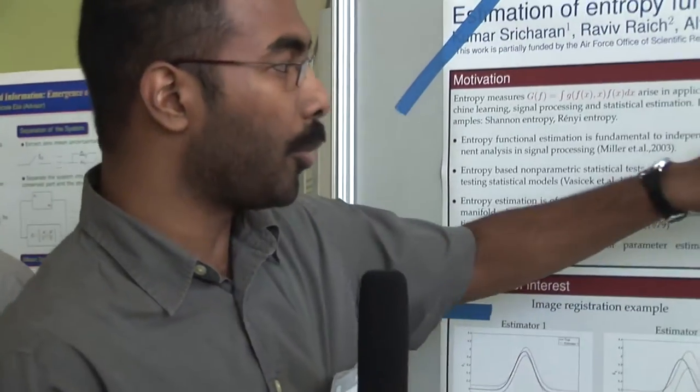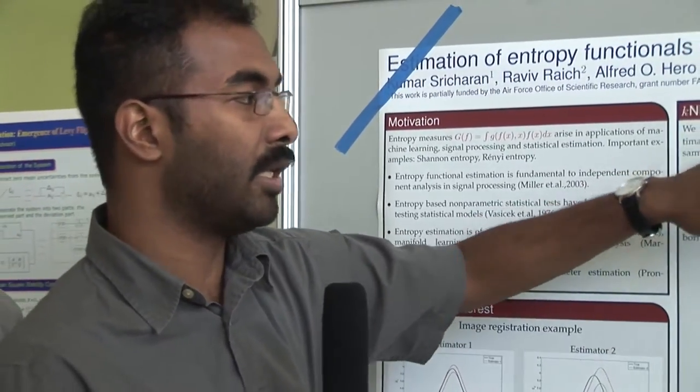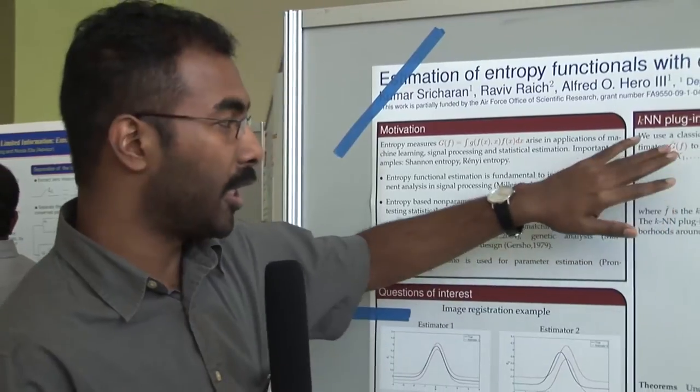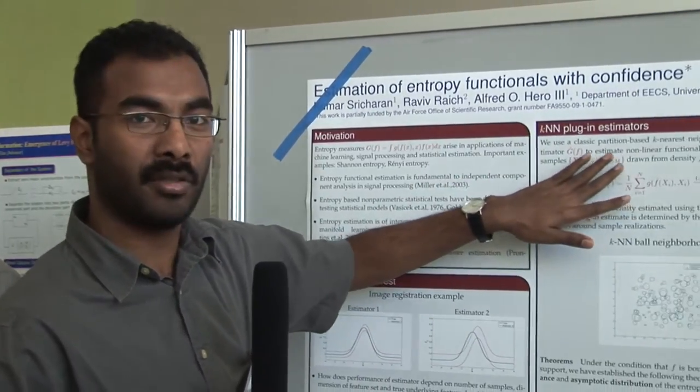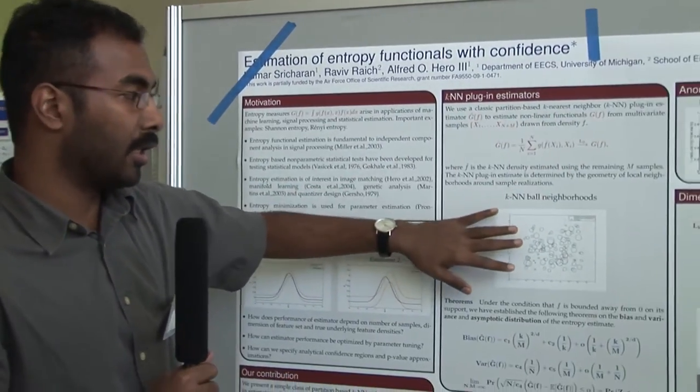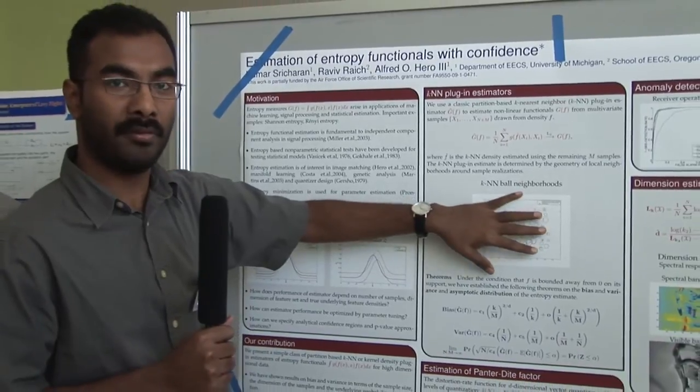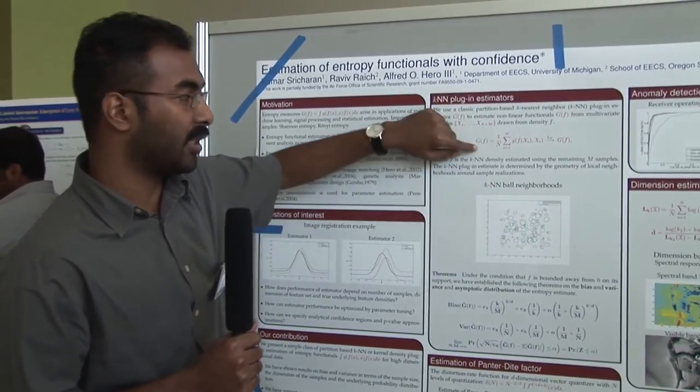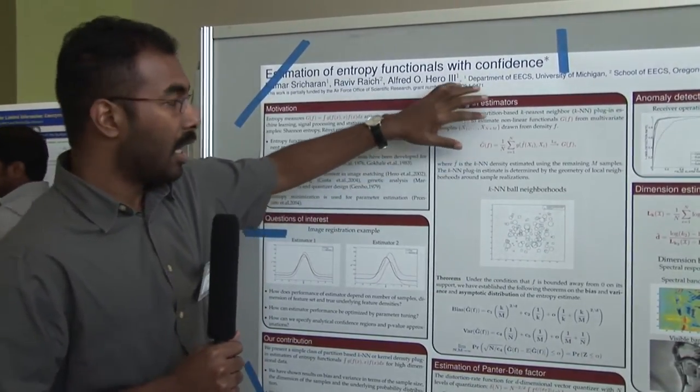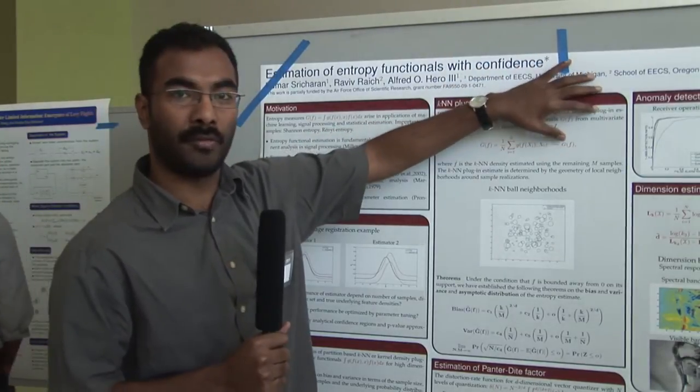To do this, I propose a partition-based k-nearest neighbor plug-in estimator. I assume I have n+m i.i.d. realizations from the density f. I construct a partition k-nearest neighbor ball graph, and using this ball graph, I construct the estimator ĝ(f). I show that ĝ(f) converges to g(f) in the L2 sense.